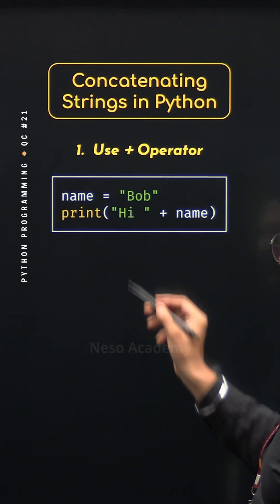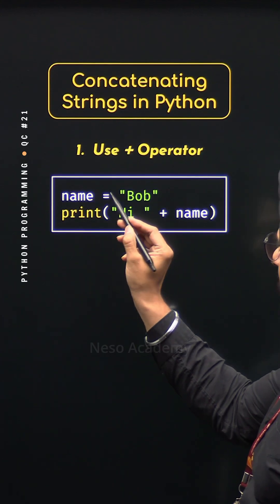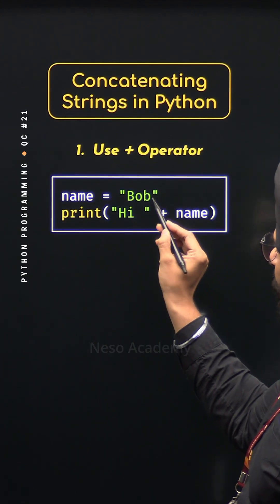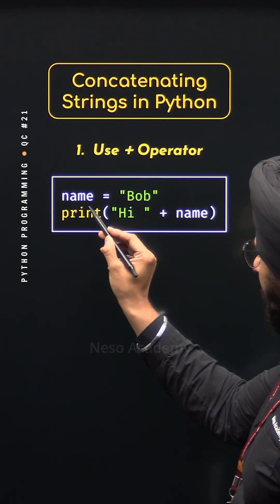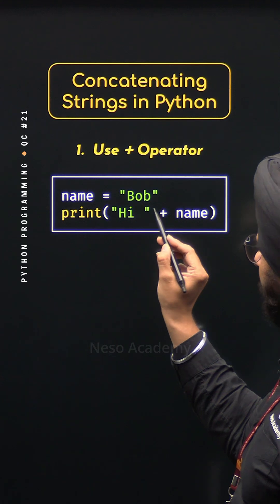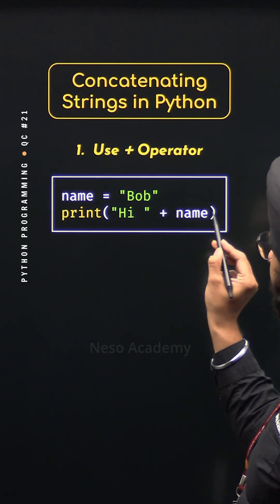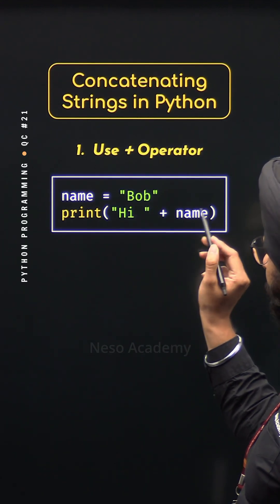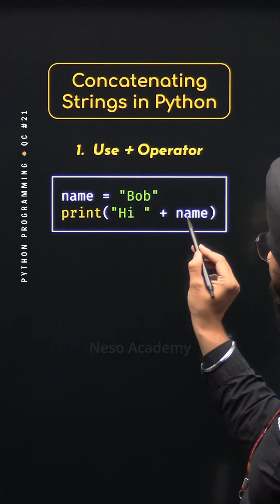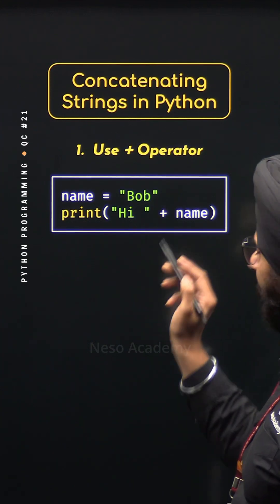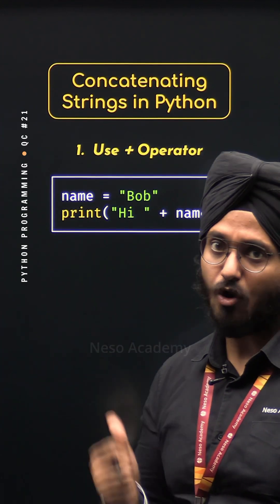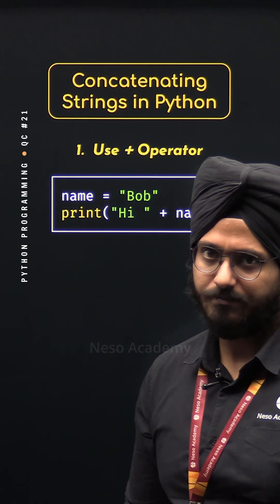For example, here I have defined variable name and I have assigned the string 'bob' to it. Inside this print function, I have written 'hi' plus 'name'. This means I am trying to concatenate 'hi' and 'bob'. We will get 'hi bob' as the result of this program.